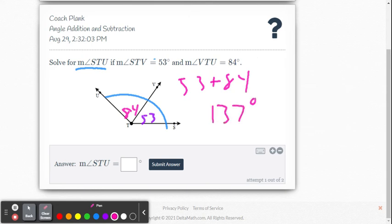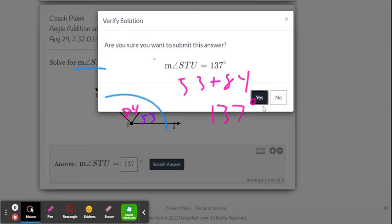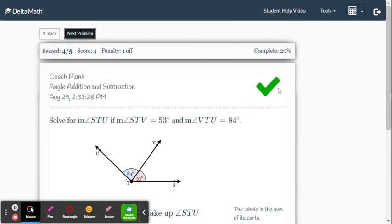If you want to write it as an equation, you could say 53 plus 84 equals x, or equals the measure of angle STU. Let's type it in and see if we get it right. 137, we hit submit. Are we sure? We think we're sure. And there's the check mark.